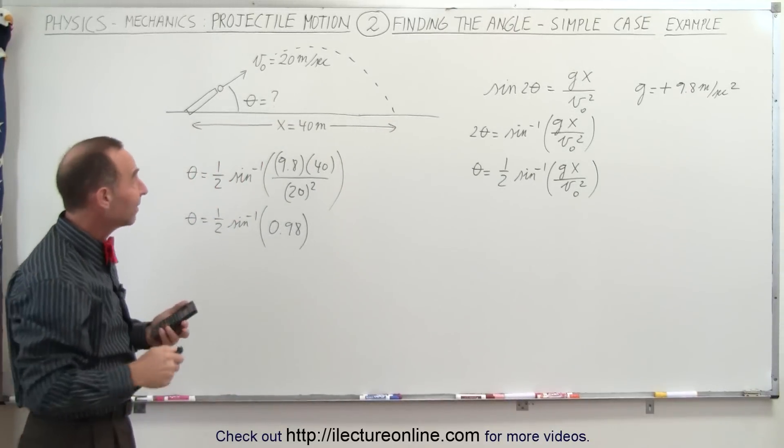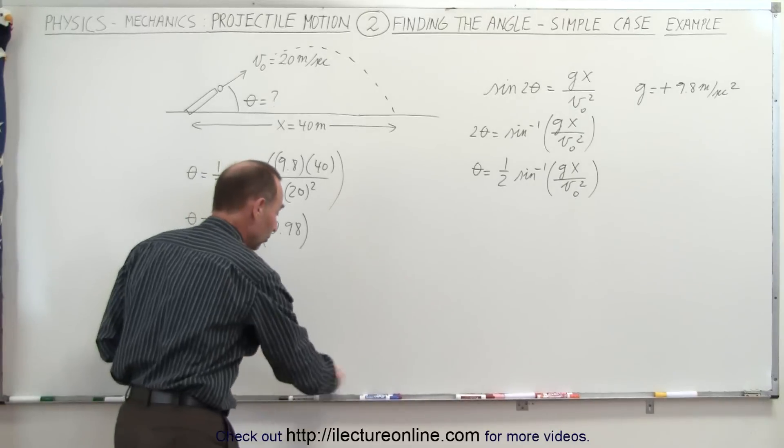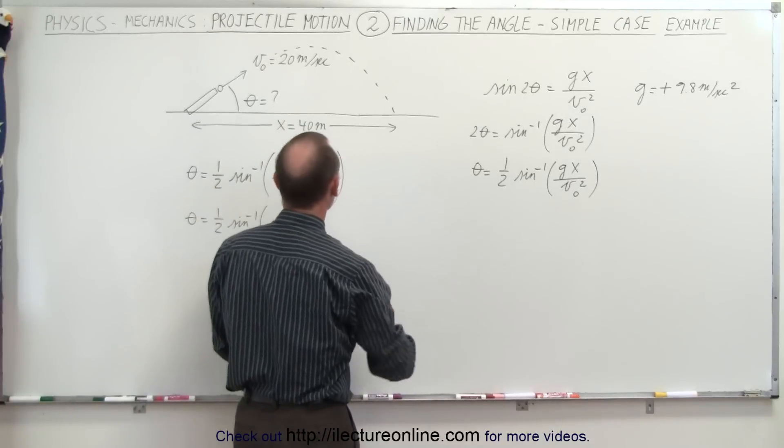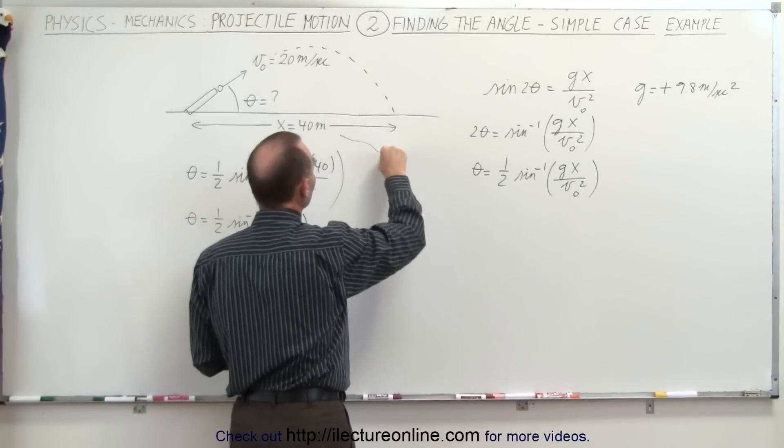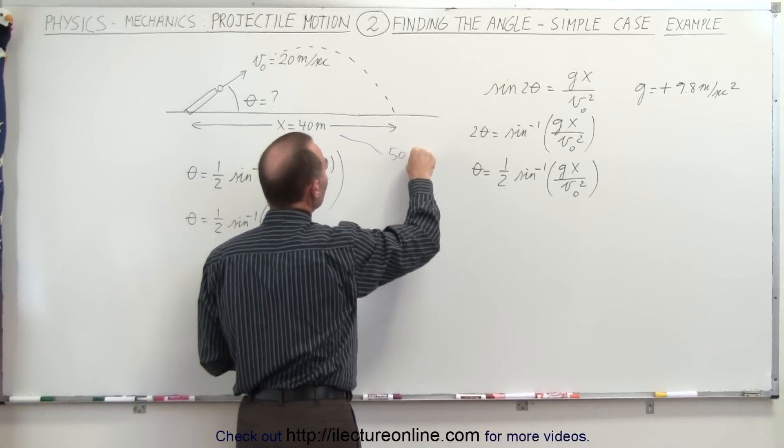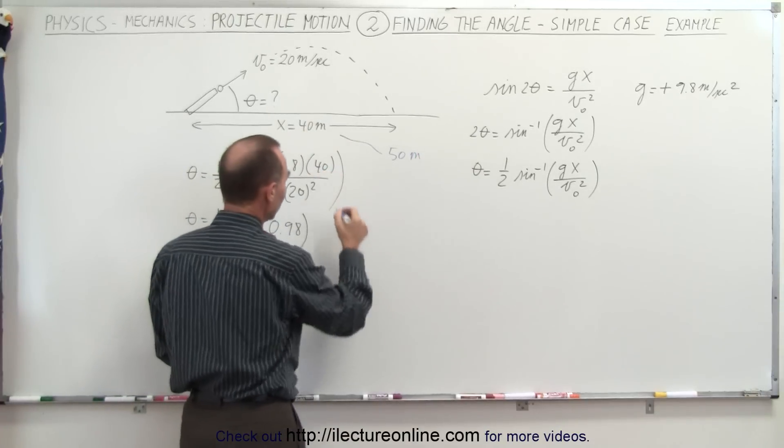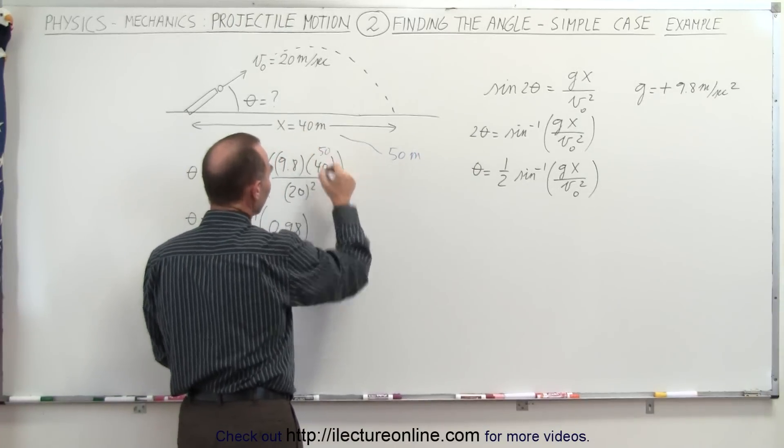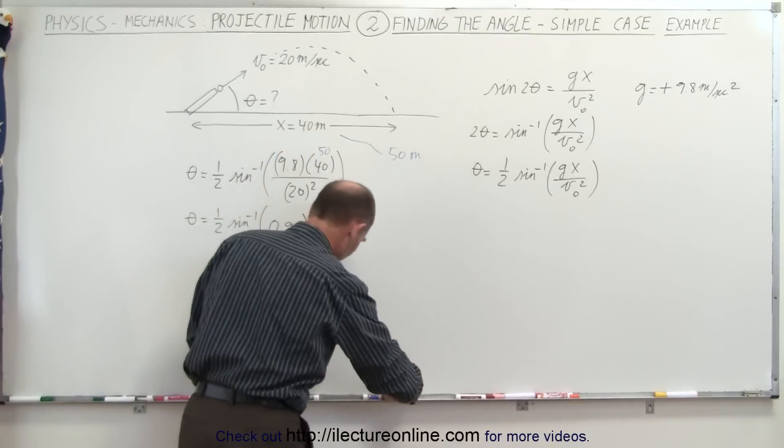For example, let's say that the range was 50 meters. So we'll just do a little example. What if the angle here, instead of 40, was going to be 50 meters? And we plug 50 in there instead of 40. So if this becomes 50 instead of 40, let's see what we end up with.